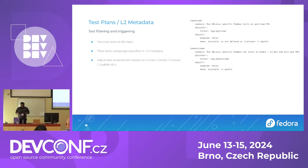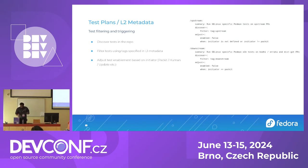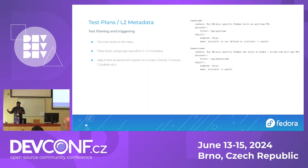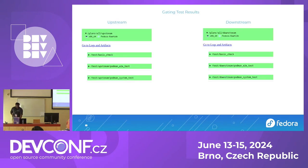L2 metadata specifies when and how to run. For example, if the initiator is Packit — meaning it's a bot, not a human — you want to run the upstream tests. Whenever Packit creates a PR in dist-git downstream, you want to run the downstream tests. This is an example of how you can view upstream and downstream test results.